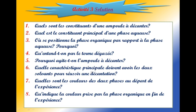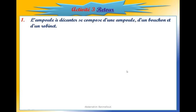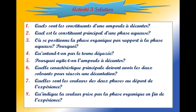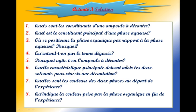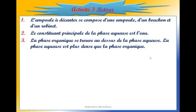Activité 3 : Quelles sont les composantes d'une ampoule à décanter ? L'ampoule à décanter se compose d'une ampoule, un bouchon et un robinet. Quelle est la constitution principale d'une phase aqueuse ? La constitution principale de la phase aqueuse est l'eau. Où se positionne la phase organique par rapport à la phase aqueuse ? La phase organique se trouve au-dessus de la phase aqueuse, car la phase aqueuse est plus dense.